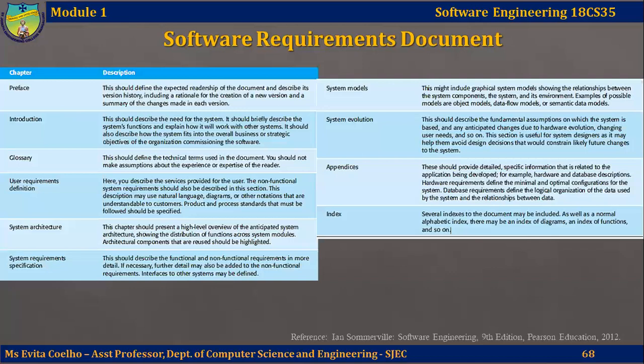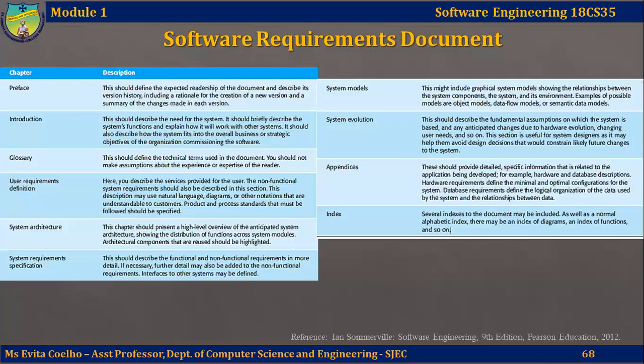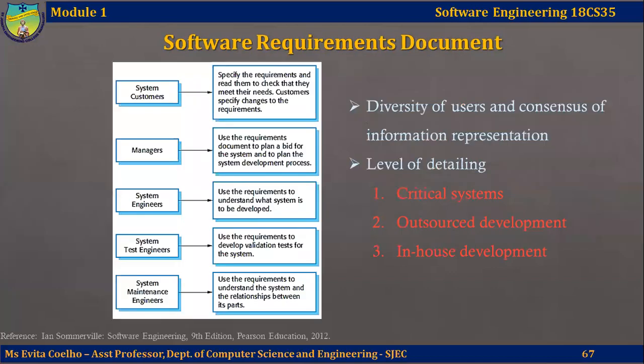In this lecture video, we have understood what a system requirements document or SRS will look like. A standard is defined by IEEE, but you can make changes, add, and remove whatever sections are not required — it greatly depends on the type of software you are going to develop. We have also understood the diversity of users and how these users are going to use the SRS.